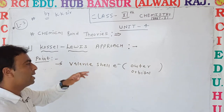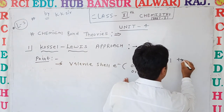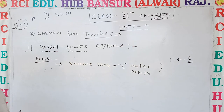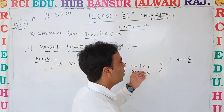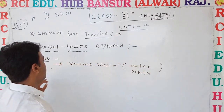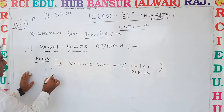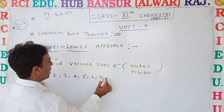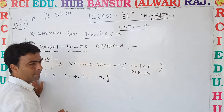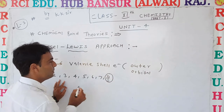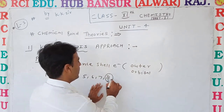The valence shell electrons depend on the element — they may be minimum 1 to maximum 8. So in compounds, elements may have 1 to 8 electrons present in their outer orbital — 1, 2, 3, 4, or 5 electrons.